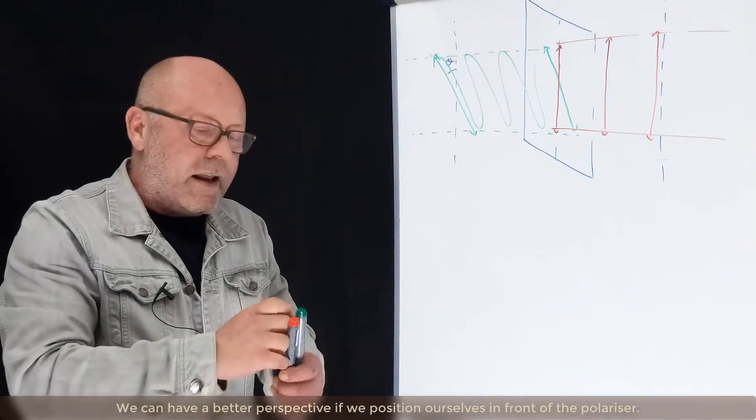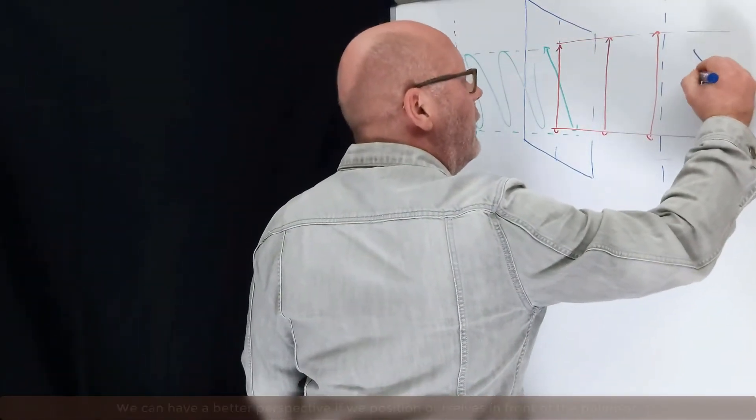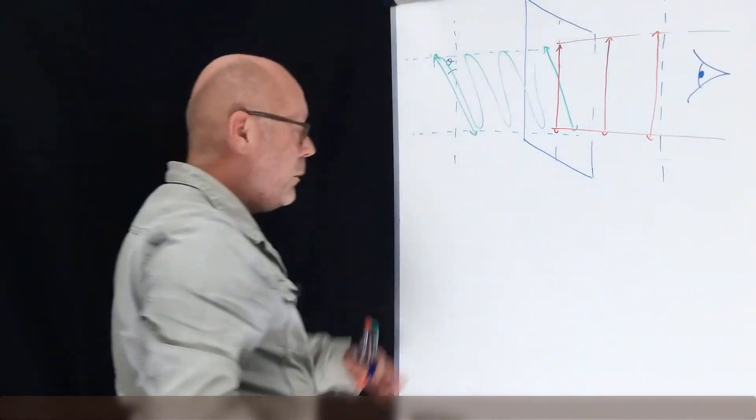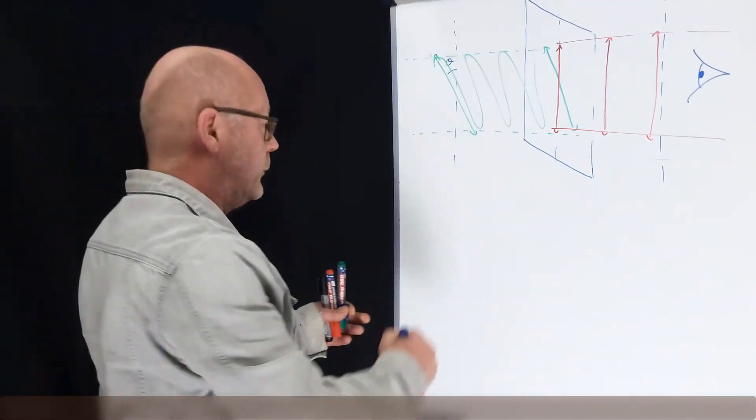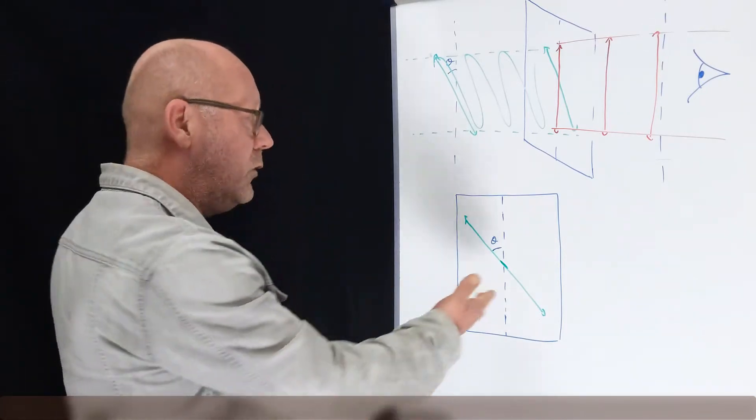Now, we can have a better perspective if we position ourselves in front of the polarizer. So I will make another drawing here. By taking an observer position which is facing the polarizer, this is what we get.